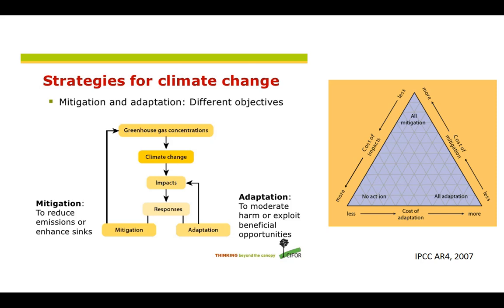Mitigation, on the other hand, involves attempts to slow the process of global climate change, usually by lowering the level of greenhouse gases in the atmosphere. For example, planting trees that absorb carbon dioxide from the air and store it inside plant matter is an example of such a strategy.